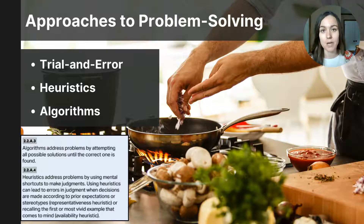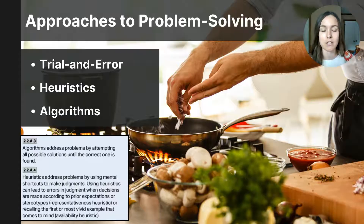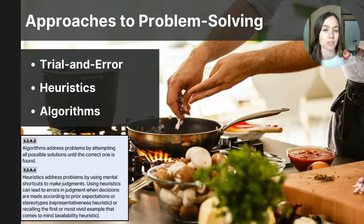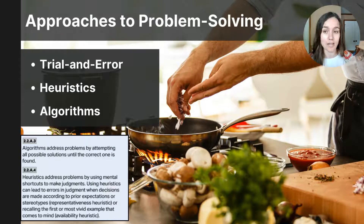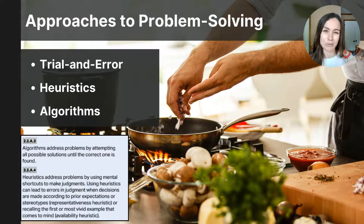The next problem solving method is heuristics. This approach uses a rule of thumb or general guidelines rather than a step-by-step process. For instance, you might use a pinch of salt in a recipe instead of measuring the exact amount needed. Heuristics offer a quick and easy approach to a solution by simplifying the task and reducing mental effort. However, they might not always produce the desired outcome and can be prone to cognitive biases, potentially leading to unsuitable solutions.